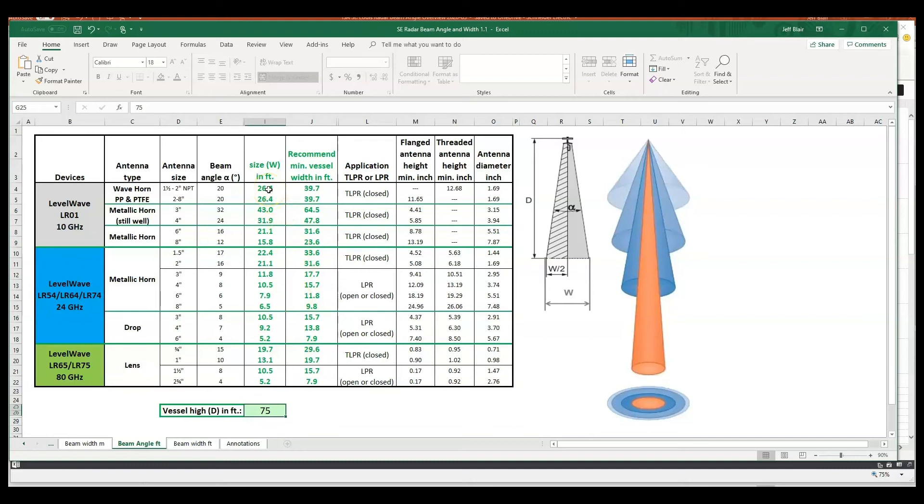So let's go with 75 feet down here, and you can see different variations as to how big that beam will actually be - beam size width in feet from 2-inch NPT antenna, 26.4 feet wide, to the 24 gigahertz 6-inch drop antenna, 5.2, and a little over five feet for a 2 and 3/4 inch lens antenna from an 80 gigahertz radar.